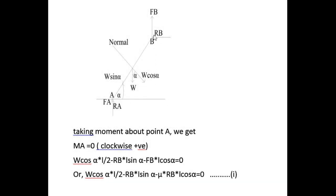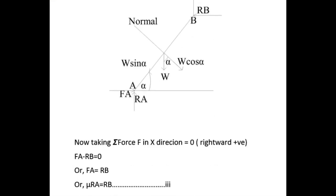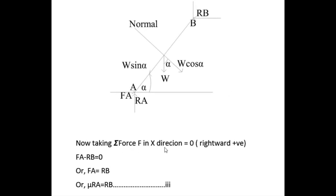Taking summation of forces in the y direction equals zero with upward as positive: RA + FB − W = 0. This is equation 2. Taking summation of forces in the x direction equals zero with rightward as positive: FA − RB = 0, so FA = RB. Substituting FA = μ × RA gives μ × RA = RB. This is equation 3.